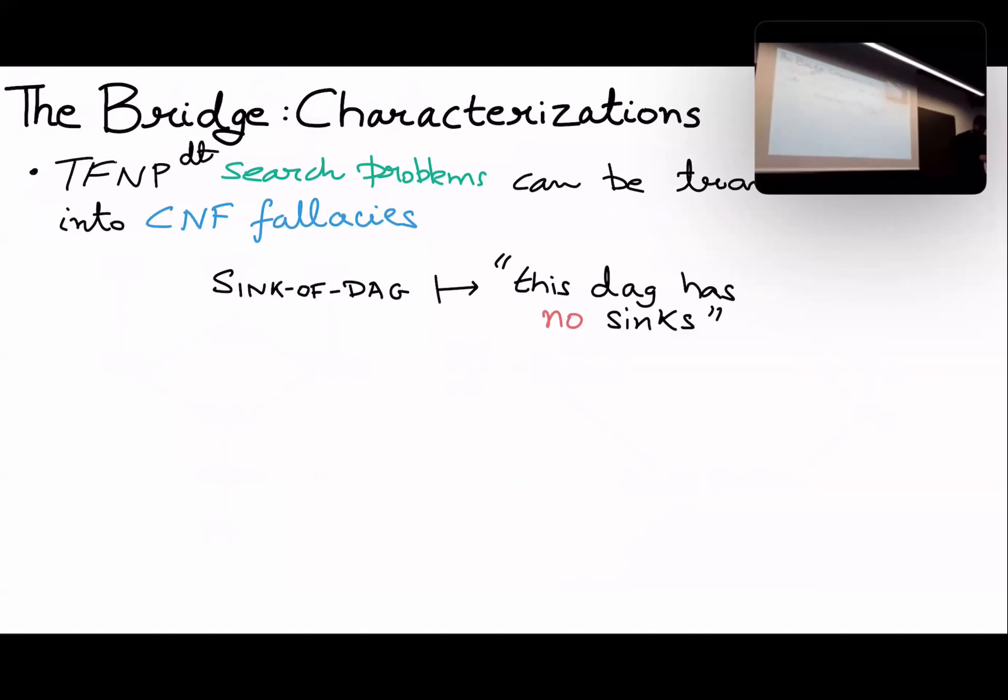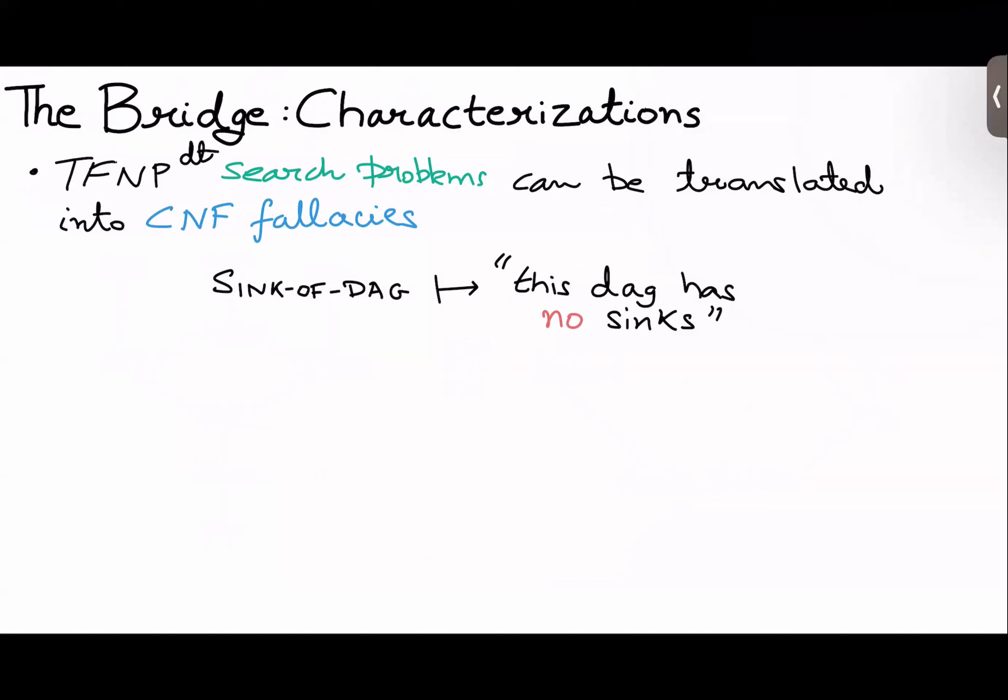Let's make this more concrete. So, why do TFNP search problems define CNF tautologies? Well, if I give you a black box sink of DAG, I can construct a CNF that encodes this tautology: this DAG has no sink. This is just because, in particular, decision trees can be simulated by CNF, and I can just encode no sink.